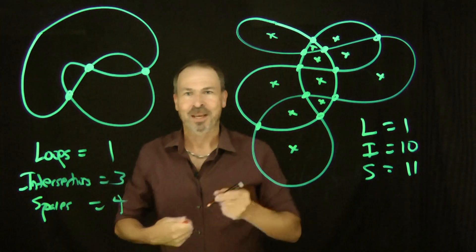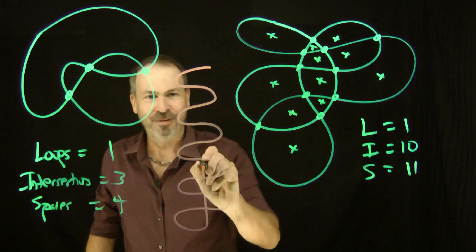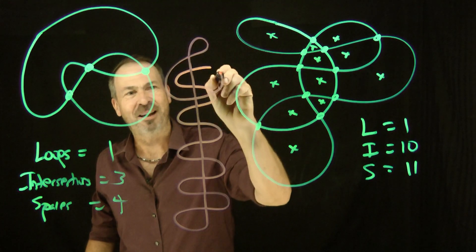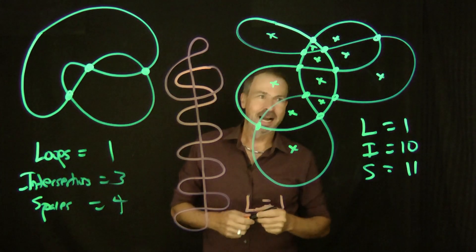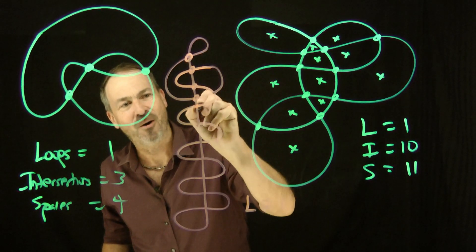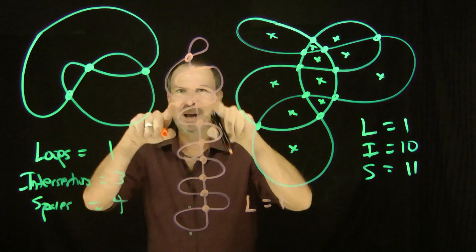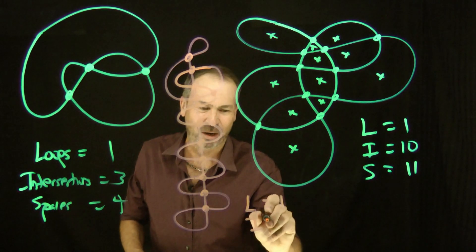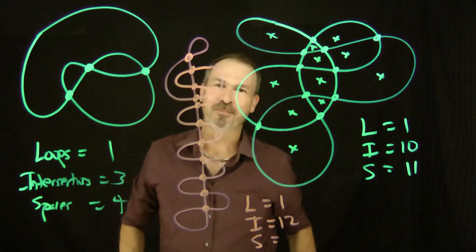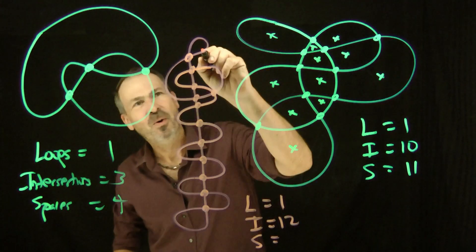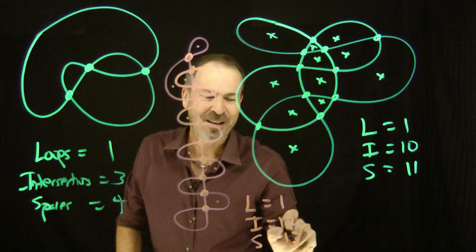Let me do another one — I'll squeeze one in between the two. Let me do something crazy like this — a wiggle shape. I'll come up like this, then come and do a wiggle thing and close like that. The number of loops is one. Intersections: one, two, three, four, five, six, seven, eight, nine, ten, eleven, twelve. Intersections is twelve. The spaces: one, two, three, four, five, six, seven, eight, nine, ten, eleven, twelve, thirteen. Thirteen spaces.